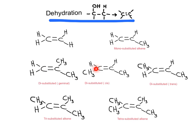We also have a disubstituted alkene known as cis, when the two hydrogens are on the same side, and a disubstituted alkene that is trans because the hydrogens are on opposite sides. We see the two groups on opposite sides. This one is propene, this one is 2-methylpropene, and this one is cis-2-butene.